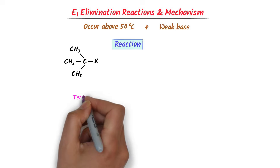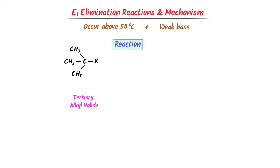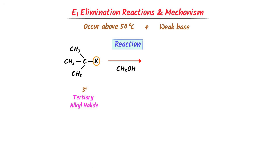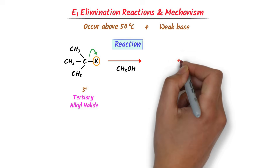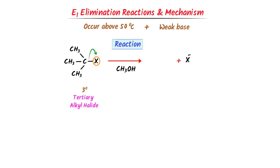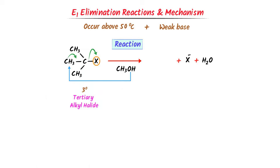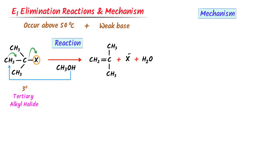In E1 elimination reaction, we take tertiary alkyl halide, also called 3-degree alkyl halide. We add a weak base like methanol. The halogen, being more electronegative, pulls the shared pair of electrons and leaves the compound — that's why we call it a leaving group. The nucleophile OH of the base attacks on the beta hydrogen, so the beta carbon loses one hydrogen and we get H2O. The electrons of the beta carbon shift towards the alpha carbon and we get the unsaturated compound. Thus, we convert tertiary alkyl halide to an unsaturated compound.